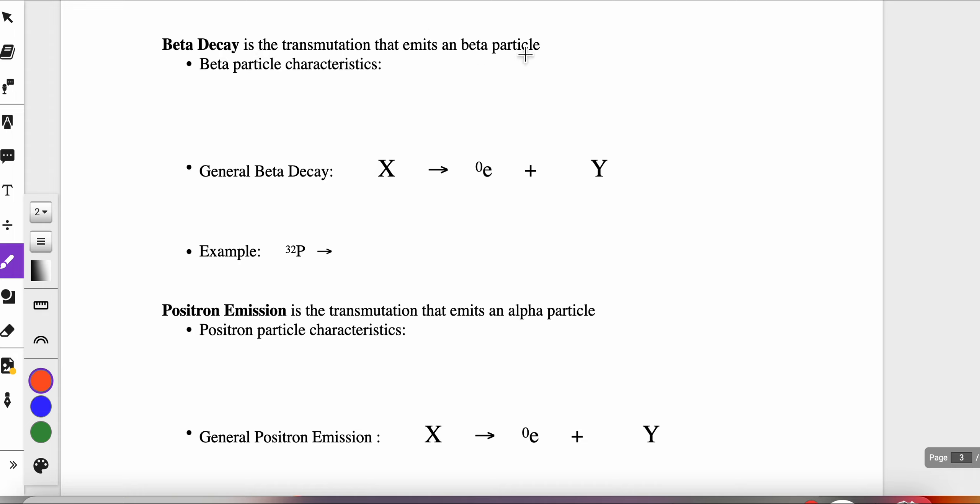Beta decay is when a beta particle is sent out of the nucleus. The beta particle is essentially an electron with no mass and carries a minus one charge. It's called a beta instead of a normal electron because it's not an electron in the energy levels. This particle is formed when a neutron decays in the nucleus - the neutron splits apart into a proton and an electron, and the electron gets emitted out as radiation.